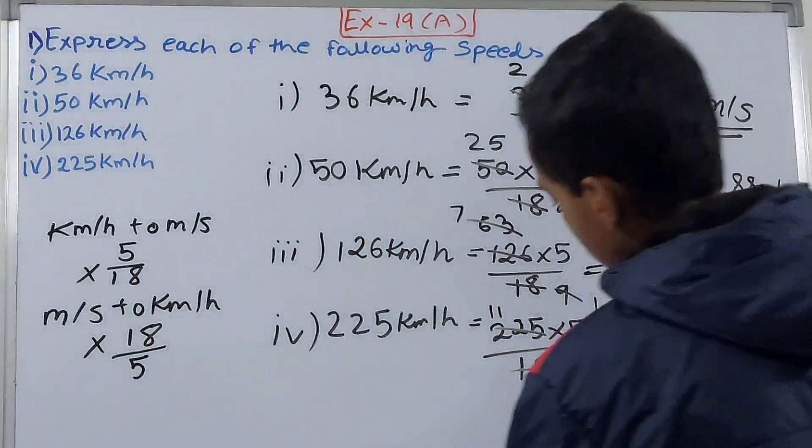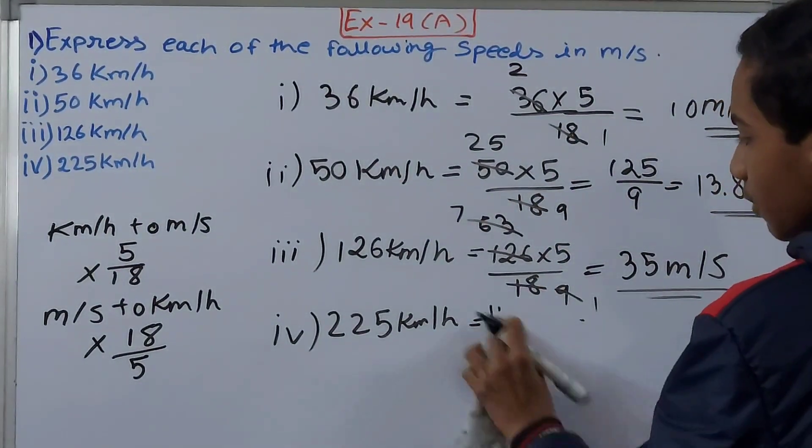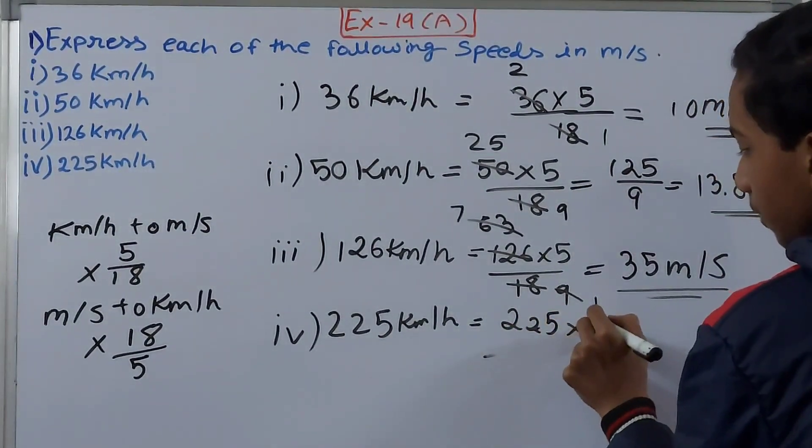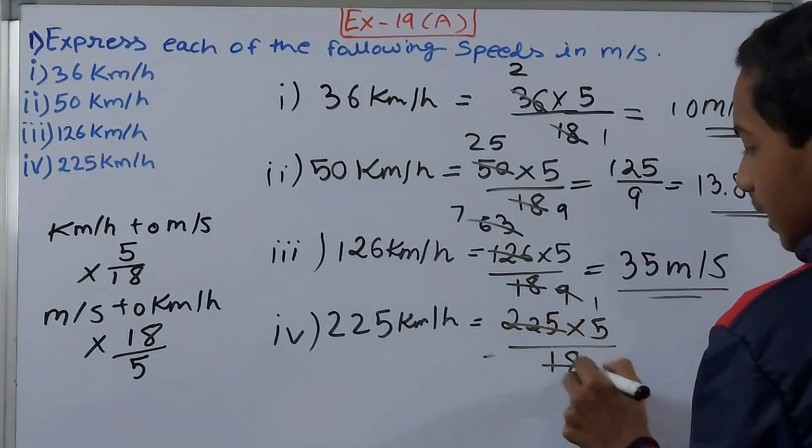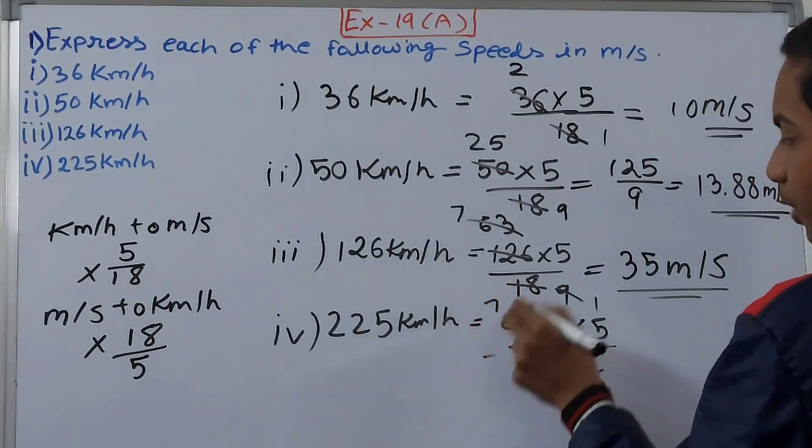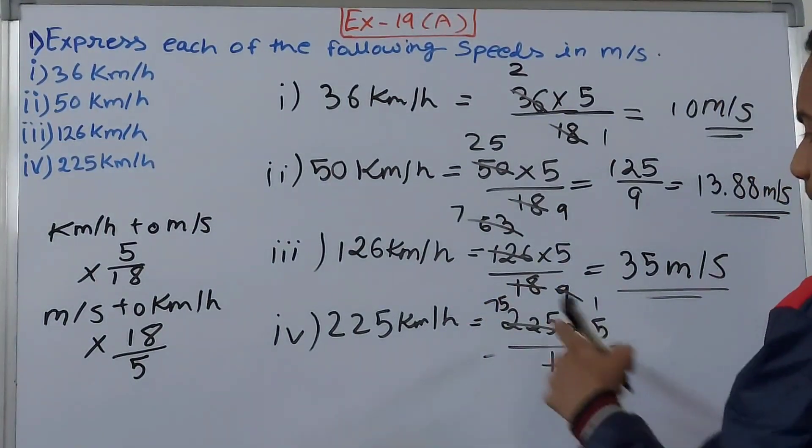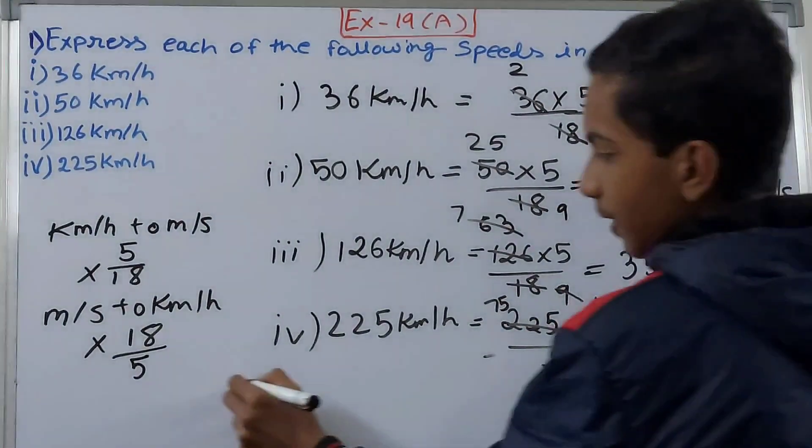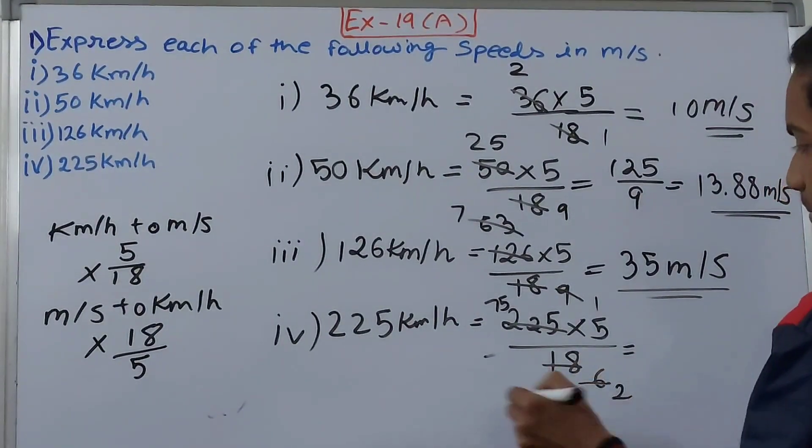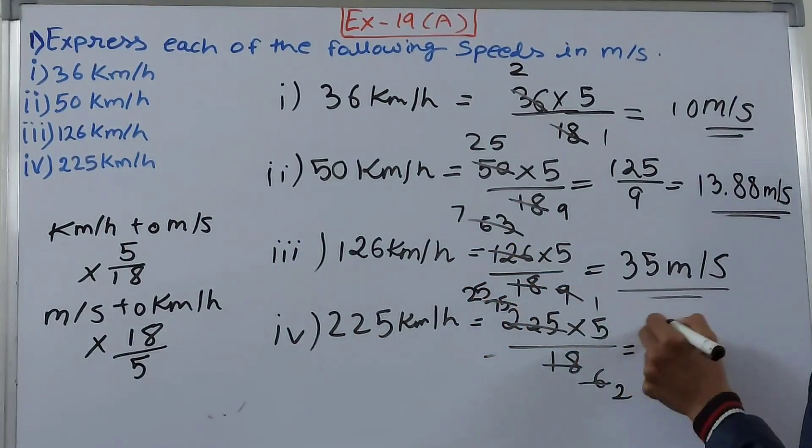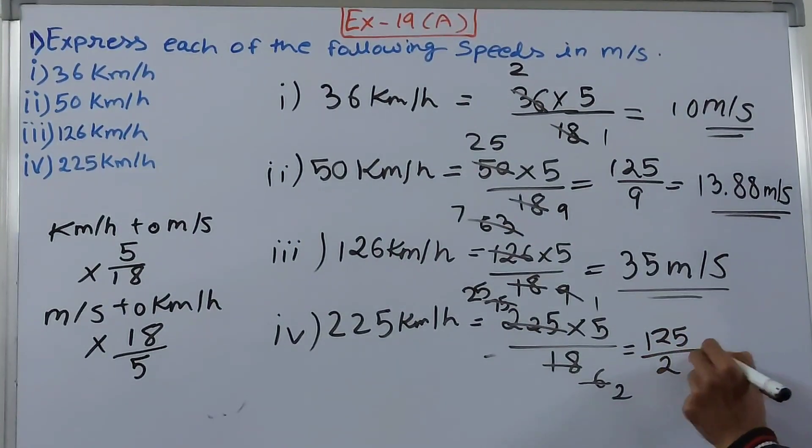Cancel by 3, 18 goes 6 times, 75 times. Then 75 into 5, cancel by 3 again, 2 times, 25. Now 25 fives are same, 125 upon 2.